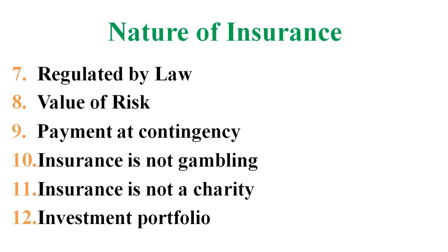To summarize, the twelve natures of insurance we have discussed are: one, contract; two, consideration; three, cooperative device; four, protection of financial risk; five, risk sharing and risk transfer; six, based upon certain principles; seven, regulated by law; eight, value of risk; nine, payment at contingency; ten, insurance is not gambling; eleven, insurance is not a charity; and twelve, investment portfolio.